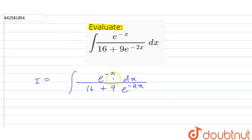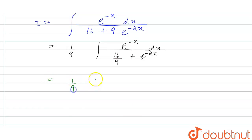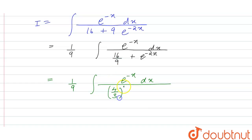The differentiation of e raised to power minus x is equal to minus e raised to power minus x. If we take 1 by 9 common from the denominator, we get e raised to power minus x dx in the numerator, and in the denominator we have 16 by 9 plus e raised to power minus 2x. This can be written as 4 by 3 whole square plus e raised to power minus x whole square.